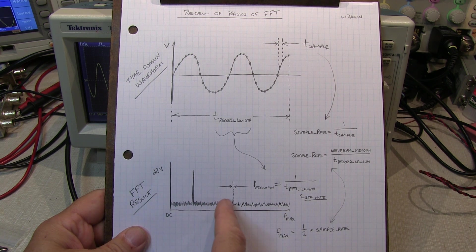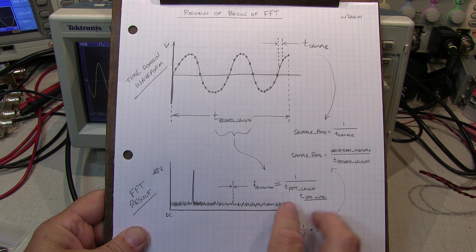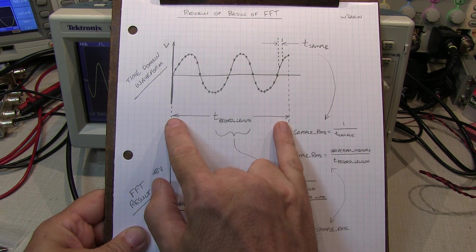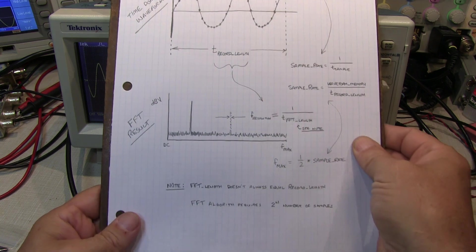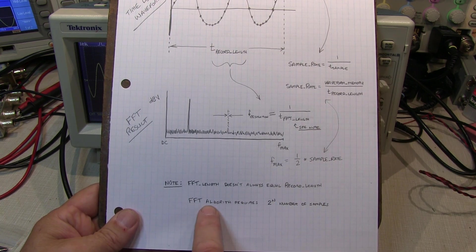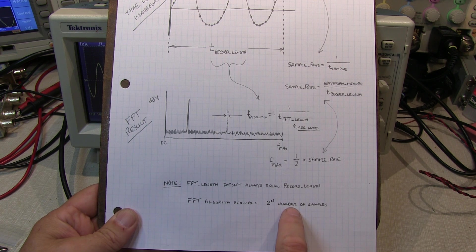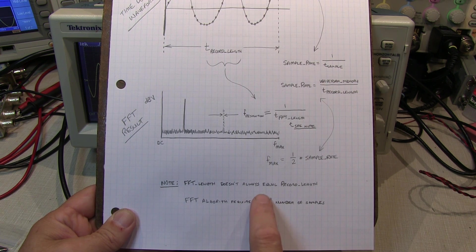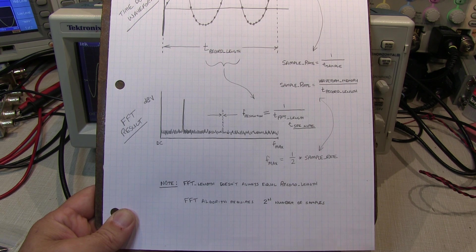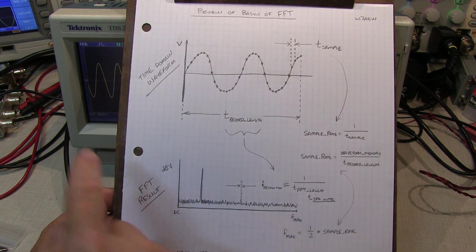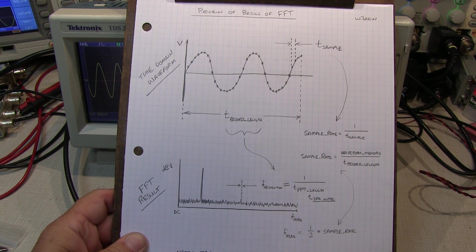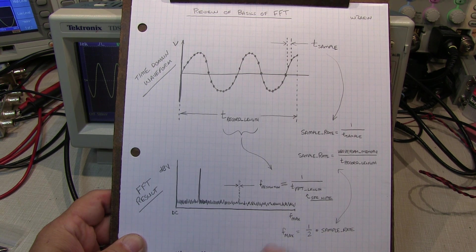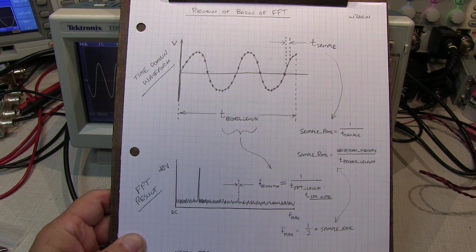The frequency resolution of the FFT result is a function of the FFT length. The FFT length may not always be equal to the record length — sometimes it will be shorter — because an FFT algorithm requires that the number of samples used be a power of two, like 1024 or 2048 where n is some integer. For example, this TDS 2000 uses a 2500-point record length, so the closest FFT length would be 2048 points, and that affects the resolution we can get out of the FFT.